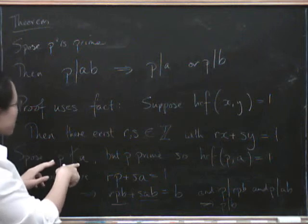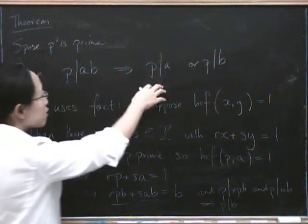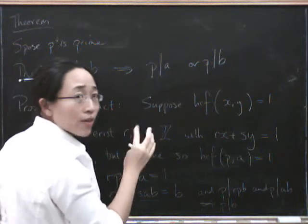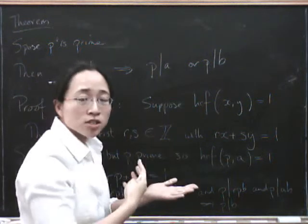So we suppose that this is true, but that p does not divide a, so we have to show that p divides b. If we can do that, then we're done, because the whole situation is symmetrical.